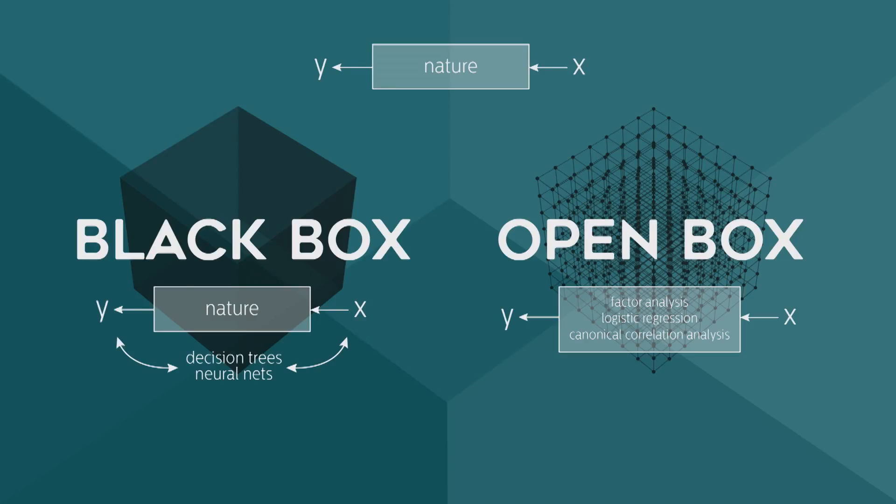The open box approach is quite different. We use very simplified models like factor analysis, linear and logistic regression, and canonical correlation analysis to try and approximate nature. We essentially build a scaffold based on what we think is the relationship between X and Y, and then fill that scaffold in using data. The good news is that it takes a lot less data, but the bad news is that we really need to know something about our domain to be able to build this scaffold appropriately.